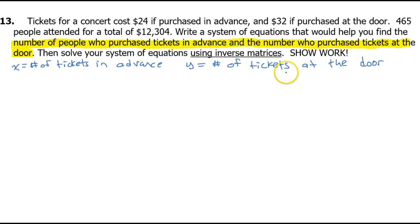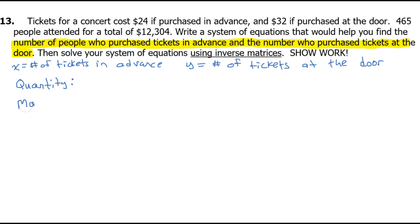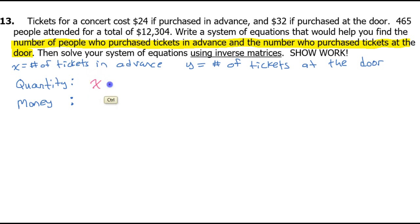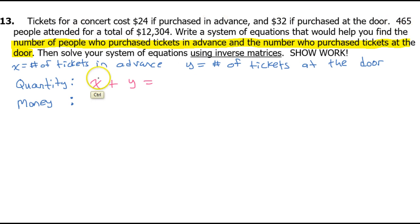It's very common to have a quantity equation. We only have two types of tickets, so X plus Y represents the total number of tickets. They told us 465 people attended, so X plus Y equals 465.